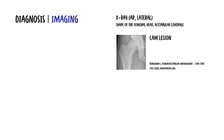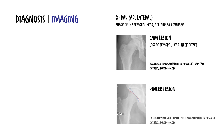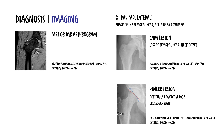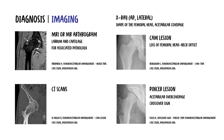Plain anteroposterior pelvic X-rays and lateral hip views are used to assess the shape of the femoral head and acetabular coverage. A CAM lesion appears as loss of the femoral head-neck offset, as shown by this X-ray, while a pincer lesion is seen as acetabular over-coverage or a crossover sign, as shown in this X-ray. MRI or MR arthrogram can evaluate the labrum and cartilage for associated pathology, and a CT scan may be used for detailed 3D assessment, particularly pre-surgically.